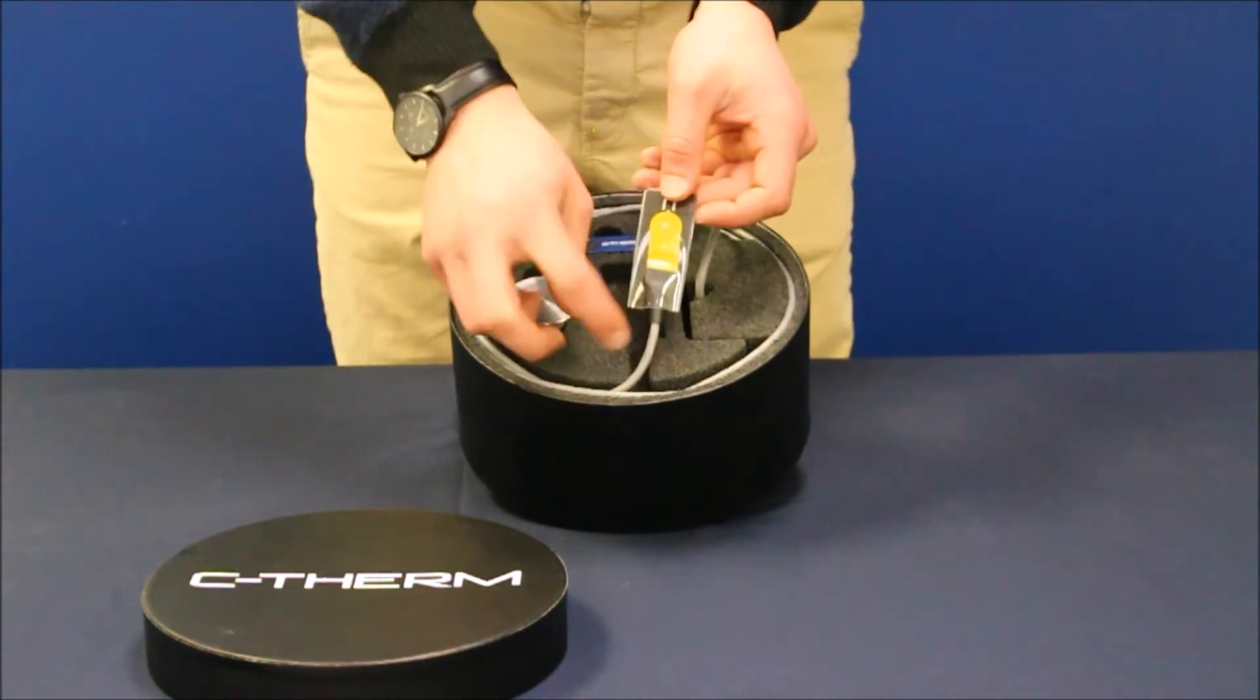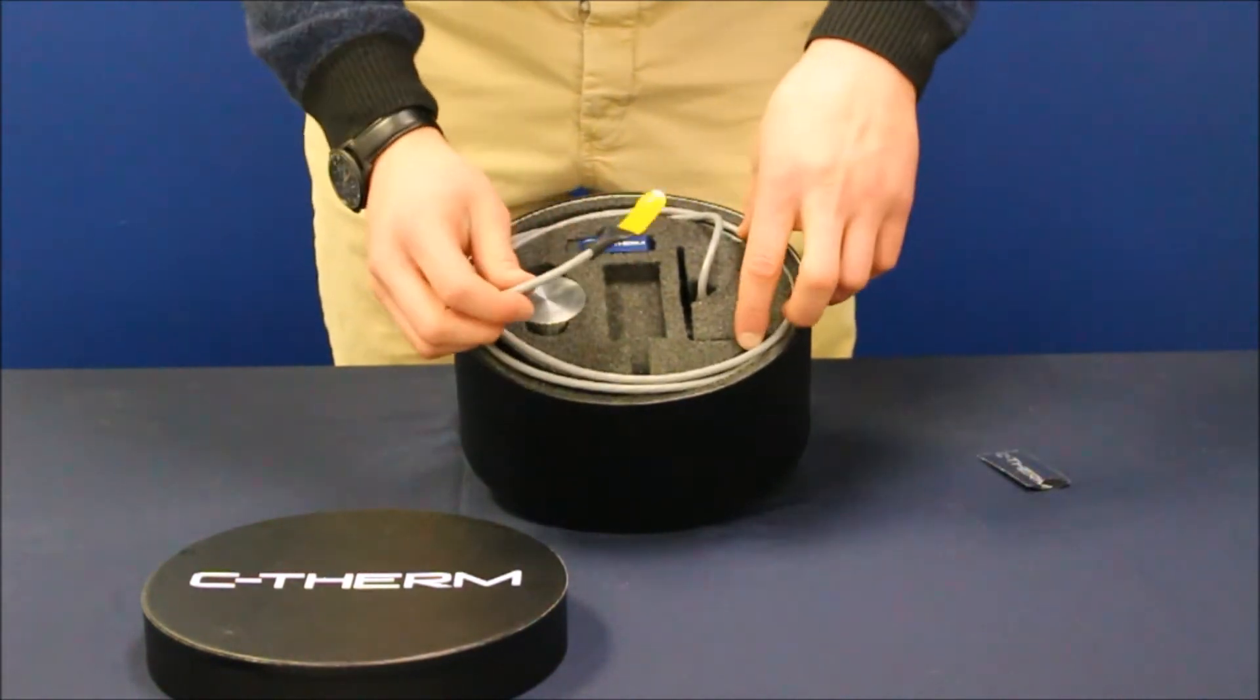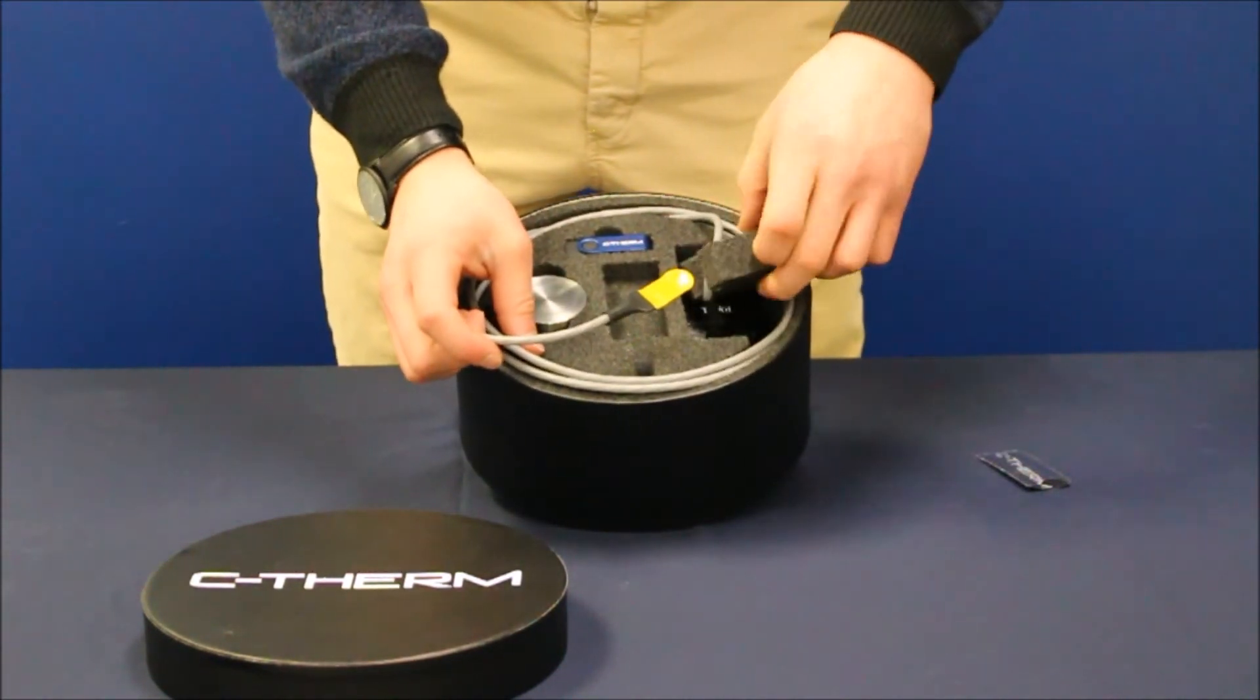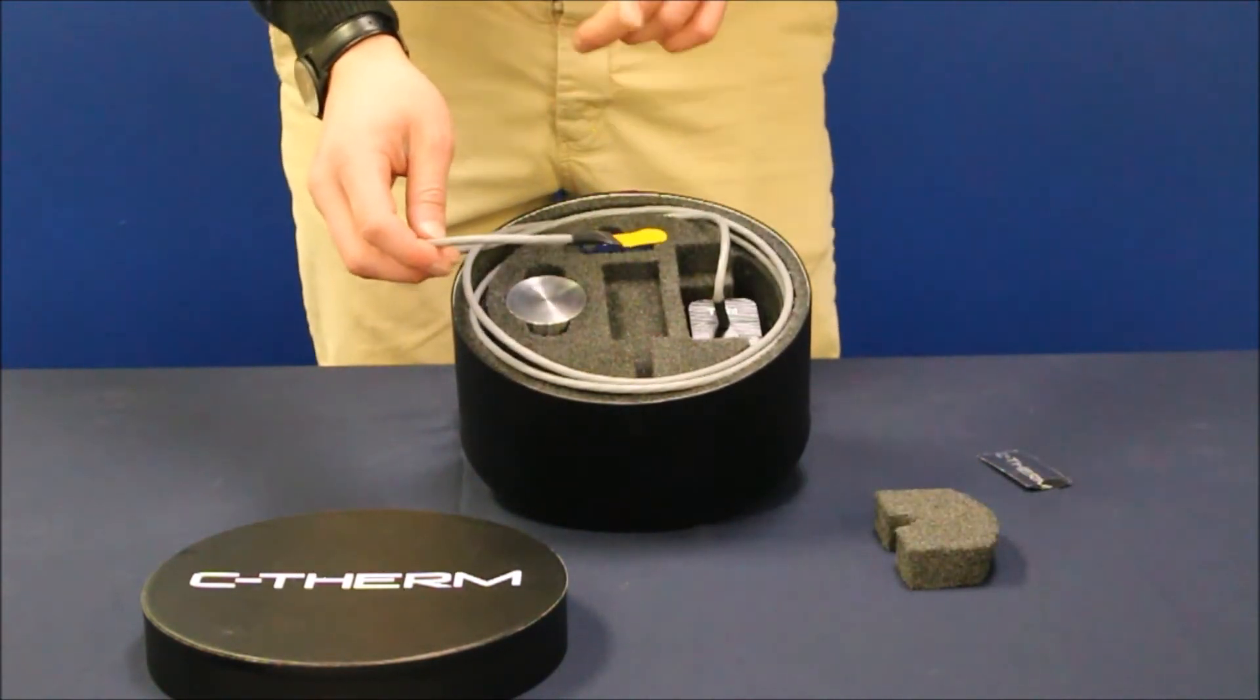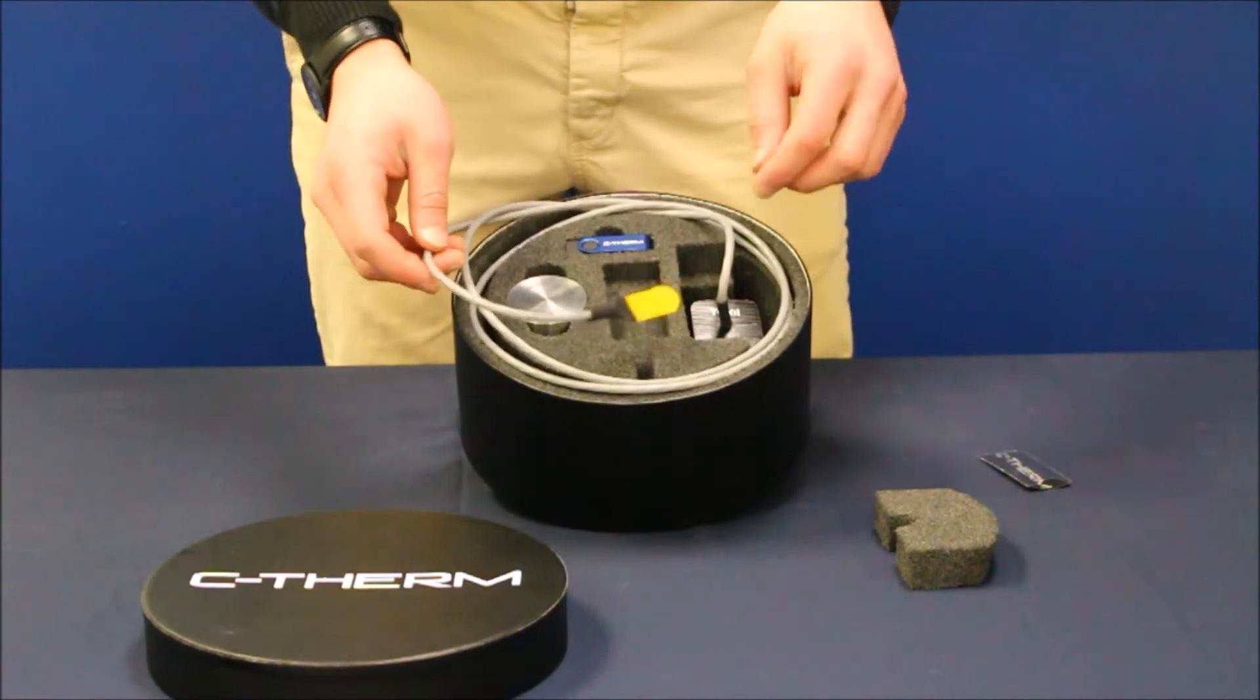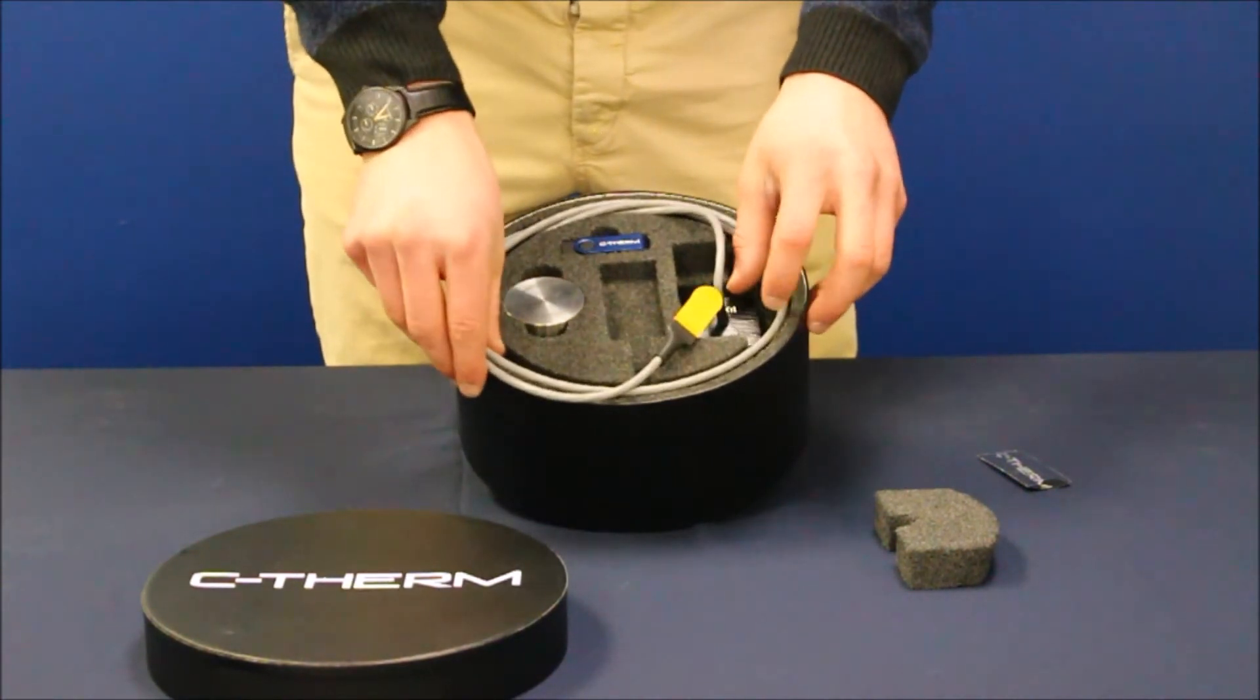First we have what we call the flex sensor. This sensor uses a transient plane source method of measuring thermal conductivity. What that means is that this sensor is placed between two flat samples of the same material, a constant heat flux is applied, and the temperature is measured over time.